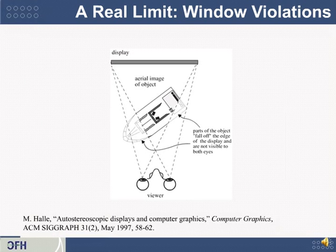But parts of the object will seem to fall off the edge or disappear if those parts of the image are not visible to both eyes. That is, the person's right eye can't see the leftmost part of the boat, because beyond it, there's no more display.